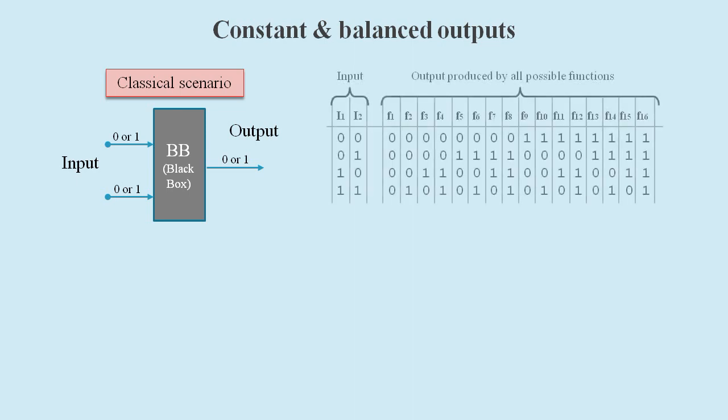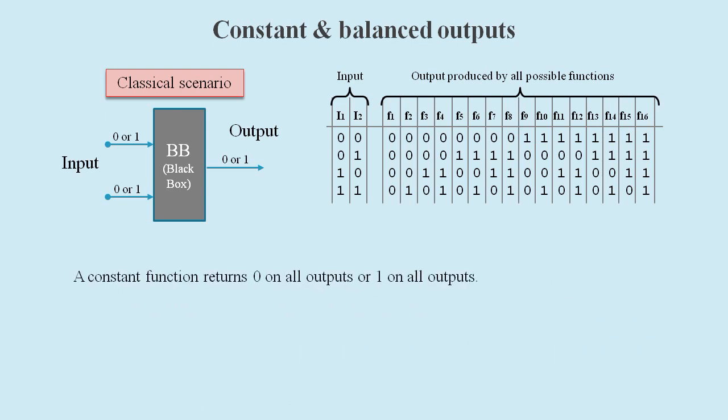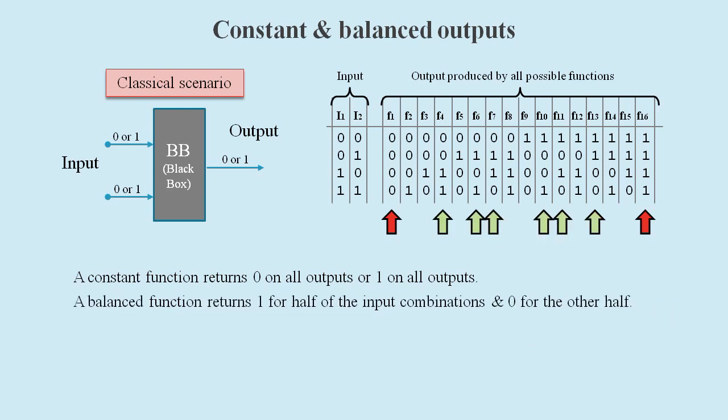For the four different input combinations of 0,0, 0,1, 1,0, and 1,1, a constant function will either always return zero or always return one. Whereas a balanced function will return a one for half the input combinations and a zero for the other half, so there will be two zeros and two ones in the output values of these balanced functions.